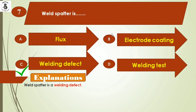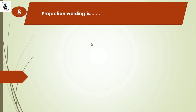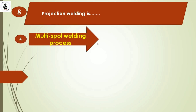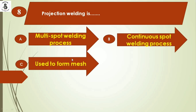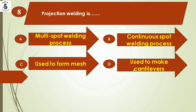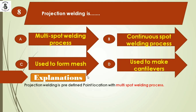Next question: projection welding is — option A: multi-spot welding process, option B: continuous spot welding process, option C: used to form mass, option D: used to make cantilevers. Projection welding is a type of resistance welding performed at predefined locations, making it a multi-spot welding process. The right answer is option A.